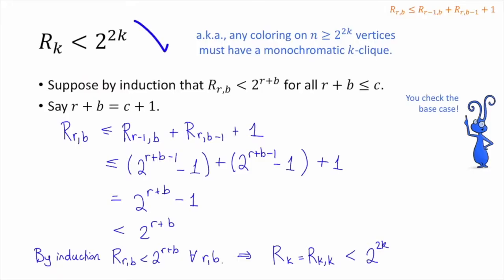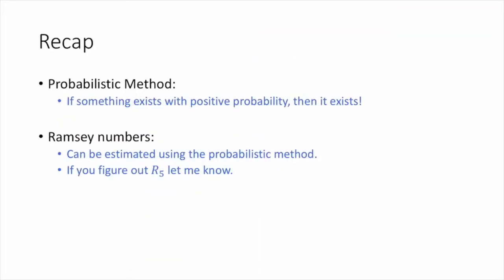This completes the proof of the whole theorem. Now we know that the kth Ramsey number r sub k is bigger than 2 to the k over 2 and less than 2 to the 2k. To recap: in this video we introduced the probabilistic method — the basic idea being that if something exists with positive probability, then it exists. We also saw a first example with Ramsey numbers, proving bounds using the probabilistic method. These bounds weren't especially tight, but doing much better is a really hard open question.